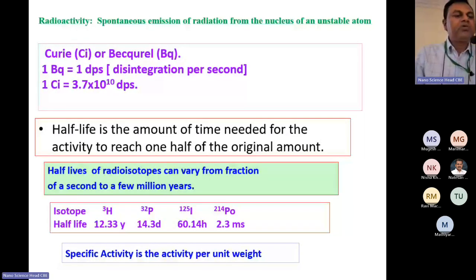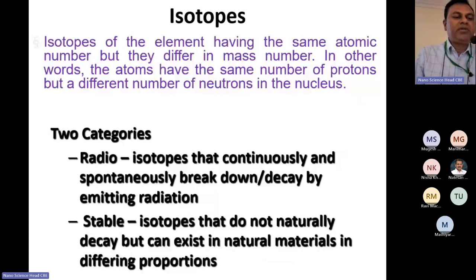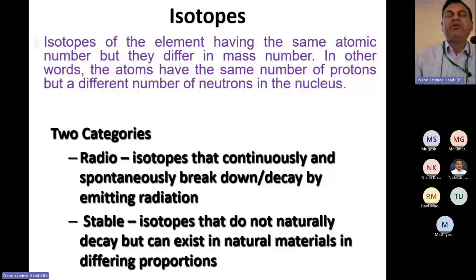Isotopes are elements having the same atomic number but different mass numbers. In other words, atoms have the same number of protons but different numbers of neutrons in the nucleus. There are two categories: radioisotopes, which emit alpha, beta, or gamma radiation, and stable isotopes, which naturally decay but can exist in natural material in different proportions.